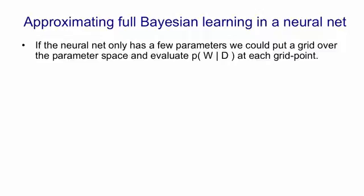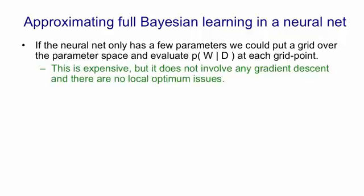and with the whole thing normalized so that the posterior probabilities add to one. This is still very expensive but notice it has some attractive features. There's no gradient descent involved and there's no local optimum issues. We're not following a path in this space. We're just evaluating a set of points in the space.